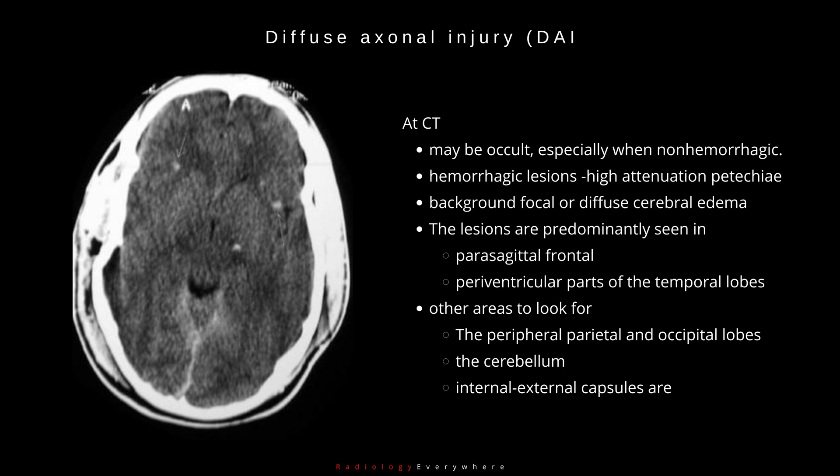The lesions are predominantly seen in the parasagittal frontal and paraventricular parts of the temporal lobes, the peripheral parietal and occipital lobes. The cerebellum and internal-external capsules are other areas to look for.